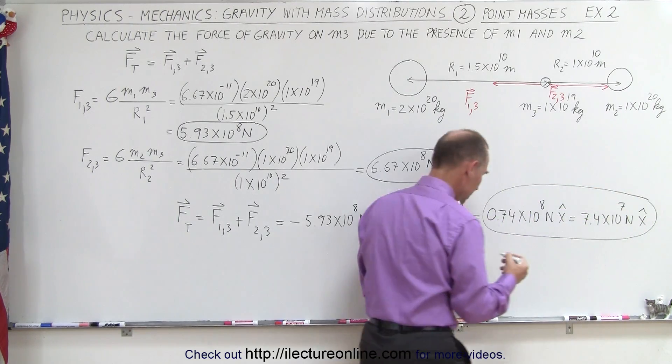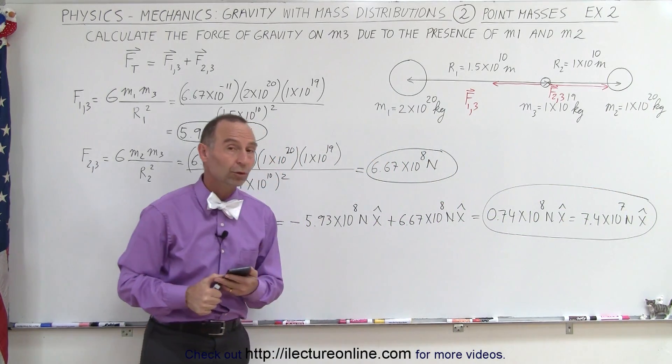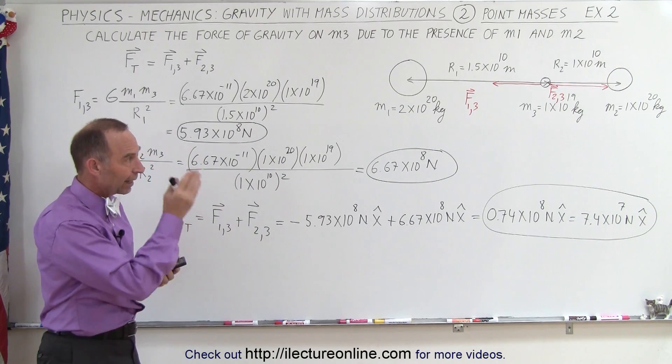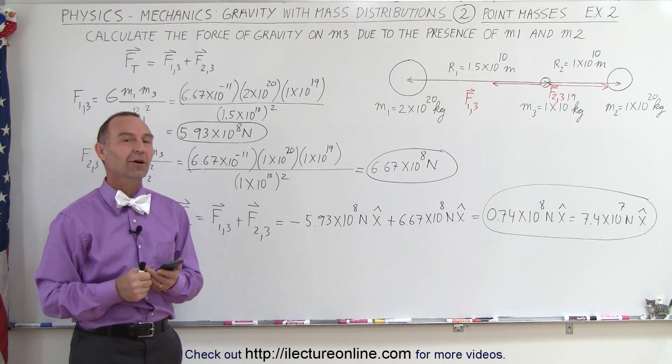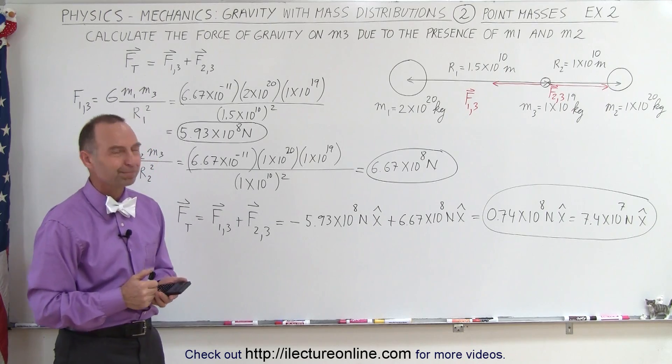So here would be the vector sum of those two, or the ultimate result, the total force acting on m3 due to the presence of m1 and m2. And that's how it's done.